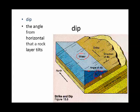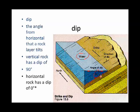So once again, the dip is the angle from the horizontal that a rock layer tilts. If the rock were vertical, it would have a dip of 90 degrees, whereas horizontal rock wouldn't dip at all. Its dip would be zero.